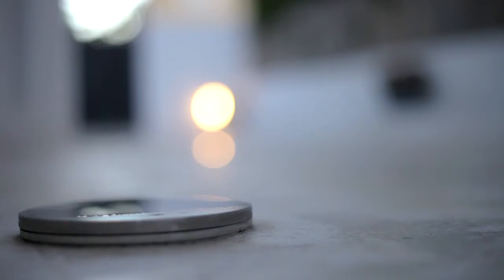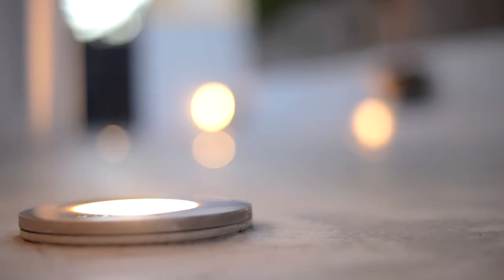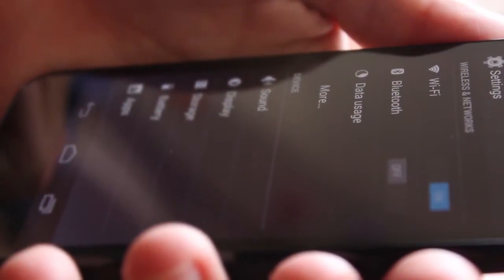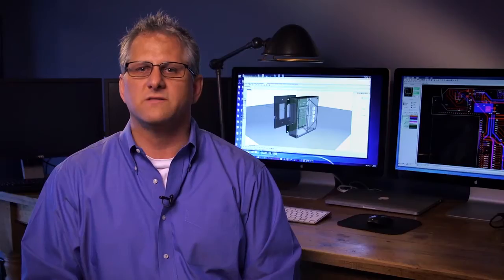Home automation is the next step in our technology-driven lives, but it has a long way to go. Currently there are some options to control lighting or your thermostat with an app on your phone, but the ability for unlimited customization is just not there until now.